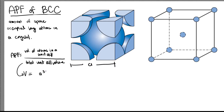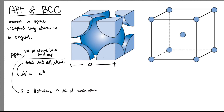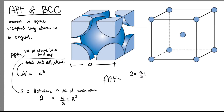For the volume of the atoms in the unit cell, this will be equal to the number of atoms multiplied by the volume of each atom. For BCC, the number of atoms is 2. For the volume, we suppose that the atoms are spherical in nature, so the equation is 4/3 π R cubed. Going back to our equation, APF is equal to 2 times 4/3 π R cubed over A cubed.